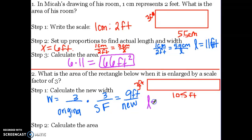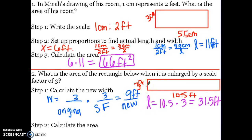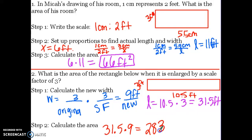For the length, we do the same thing. Take the original ten and a half, multiply it by the scale factor. Ten and a half times three is thirty-one and a half feet. So if I'm enlarging this rectangle by a scale factor of three, I multiply both sides by three to find the new side lengths. Now I can calculate the area by multiplying length times width: the new length, thirty-one and a half, times the new width, nine, equals two hundred eighty-three and five tenths square feet.